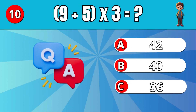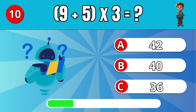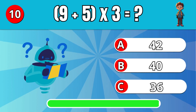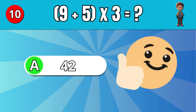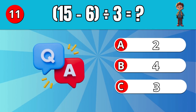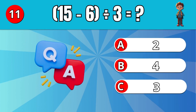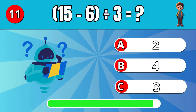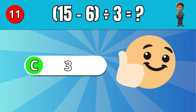What is 9 plus 5 times 3? A: 42. What is 15 minus 6 divided by 3? C: 3.